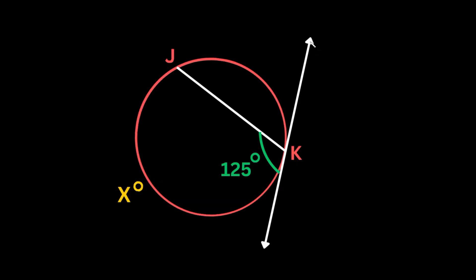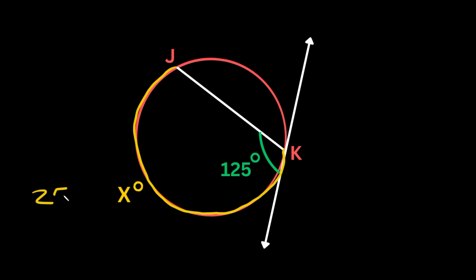Here's another similar example. We have our circle, a tangent line, and another chord intersecting and creating two angles. We're given an angle of 125 degrees and we're looking for the arc measure from J to K. The angle is always going to be half of the arc measure, or the arc measure is always twice as big as the angle. So if the angle is 125, we just double it — that's 250. So this arc measure is 250 degrees.